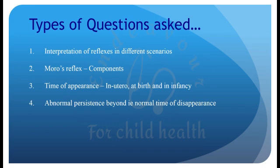The types of questions which are asked are: 1. Interpretation of reflexes in different scenarios, 2. Components of Moro reflex, 3. Time of appearance of different reflexes — whether in utero, at birth, or in infancy, and 4. Abnormal persistence, i.e., the normal time of disappearance of the reflexes.